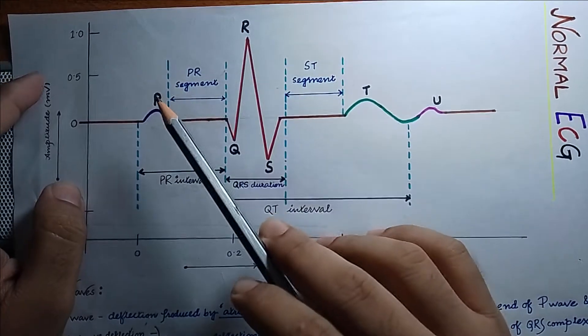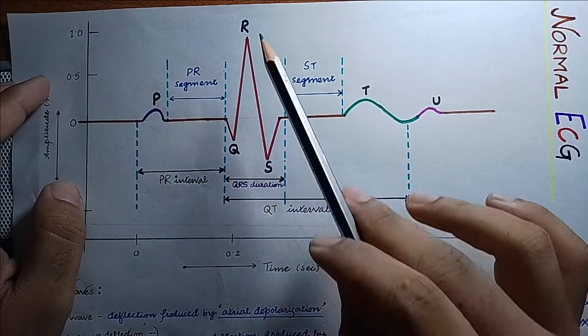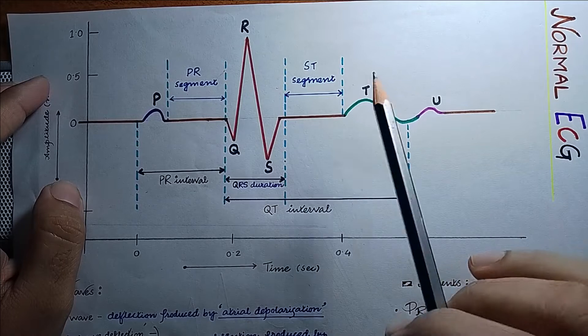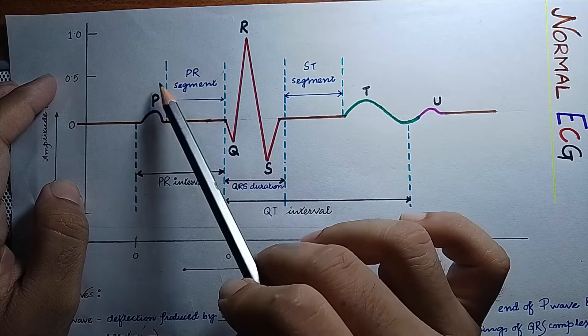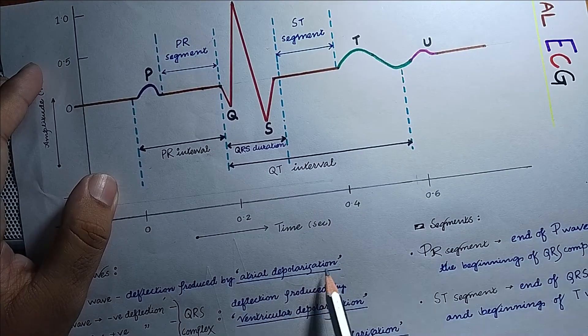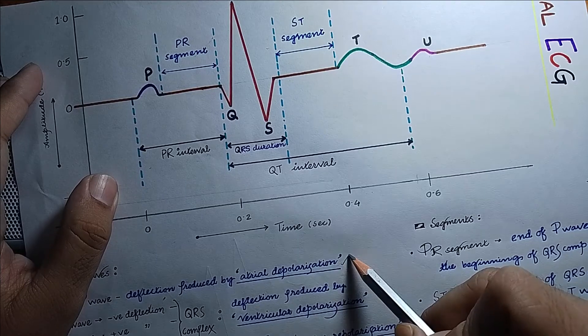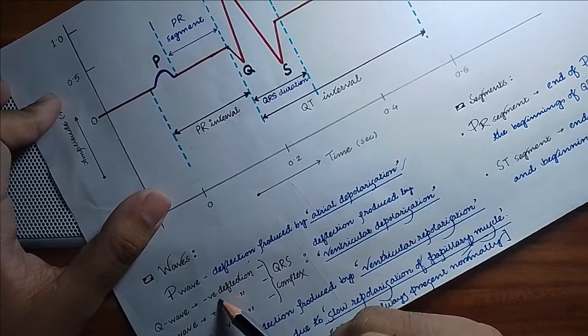First we will come to the waves. Here you can see six waves: P, Q, R, S, T, and U. The first, the P wave, is the deflection that is produced by atrial depolarization. Then comes your Q wave, which is a negative deflection.